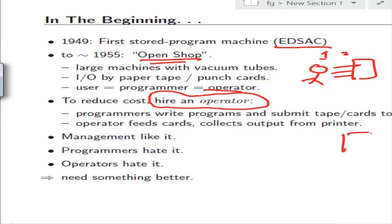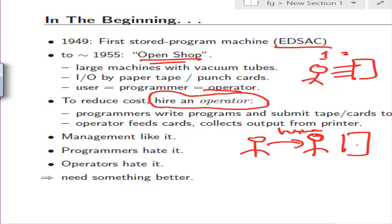We had a situation like this: a computer system, an operator, and a programmer. The programmer gives things to the operator. These human operators actually did the kind of job that today's operating systems do — loading, debugging, loading things into memory, executing, scheduling jobs, and doing setups. So basically two things needed to be done: scheduling the jobs, and setup.